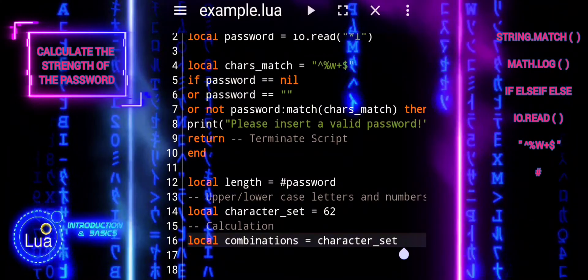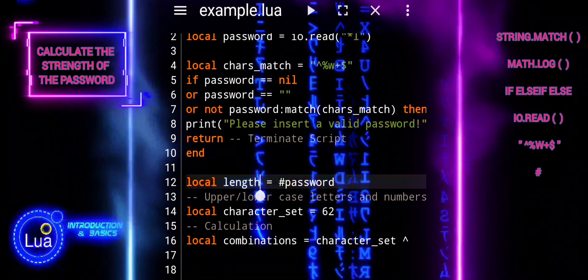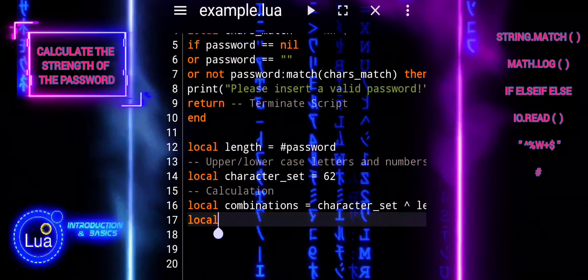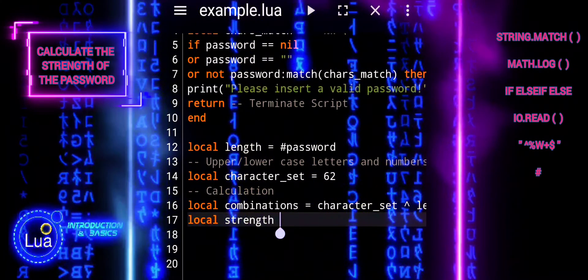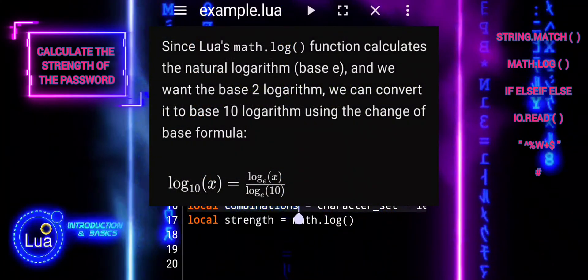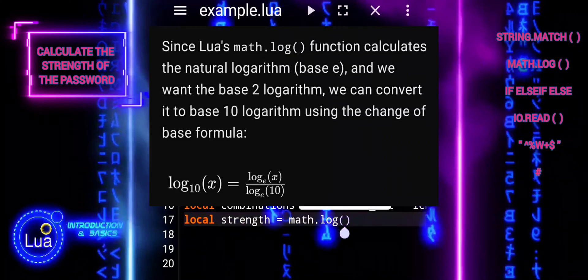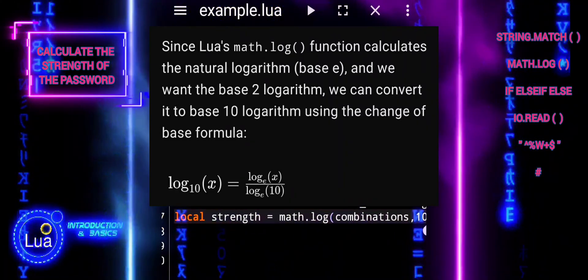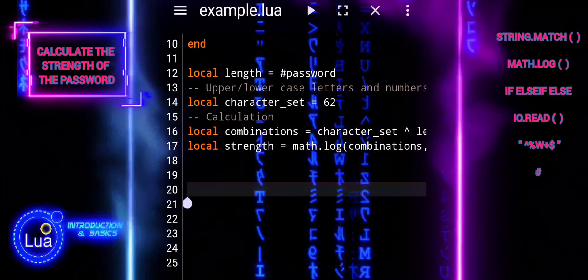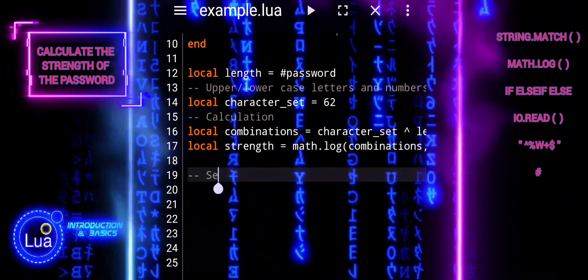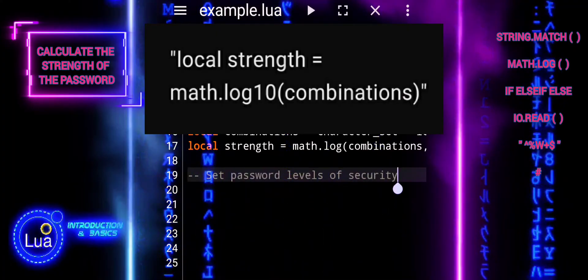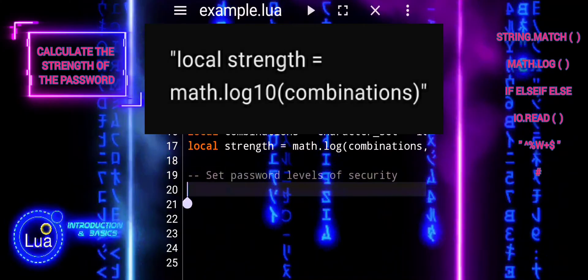This calculation represents the total number of unique combinations possible for the password. The next line calculates the strength of the password in terms of its entropy or unpredictability, using the logarithm function to compute how many bits of entropy the password possesses. Entropy measures the uncertainty or randomness of a password — a higher entropy value indicates a more unpredictable password, making it harder to guess or crack. If you are using Lua version 5.3 or higher, you can simplify this calculation using the math.log10 function directly.